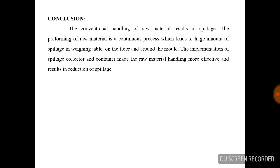Conclusion: The conventional handling of raw material results in spillage. The preforming of raw material is a continuous process which leads to a huge amount of spillage on the weighing table, on the floor, and around the mold. The implementation of the spillage collector and the container made the raw material handling more effective and results in a reduction of spillage. Thank you.